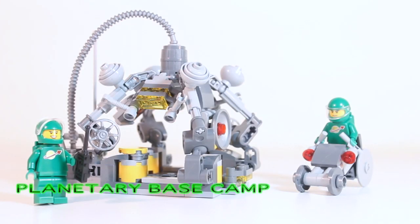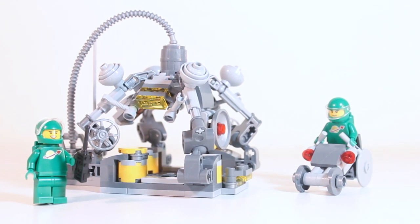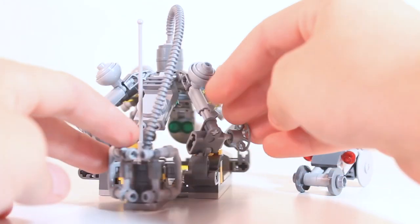And last but not least, we have a planetary base camp. Now this is something that the astronauts can use as sort of a maintenance area, or a refueling station, or a research facility. So basically we have a detailed exterior, as well as an interior.